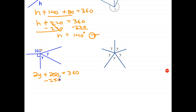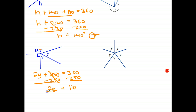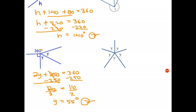Subtract 250 from each side. Whatever we do to one side, we do to the other side. That gives me 2Y equals 110 degrees. And finally, divide both sides by 2, and Y is 55 degrees. The reason for it is angles around a point add to 360.